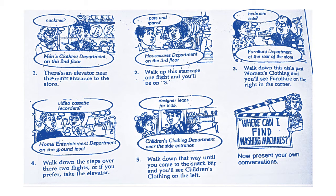All right, now we have Exercise Number One. We have necklaces — العقود — in the men's clothing department on the second floor. There is an elevator near the entrance. Entrance — يعني مدخل. Elevator — المصعد، اللي هو الأسانسير. والدرج المتحرك بسموه escalator.